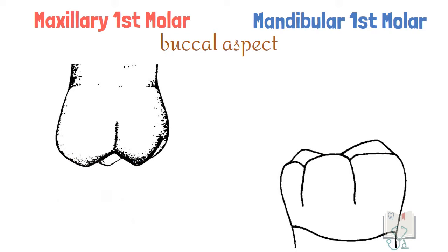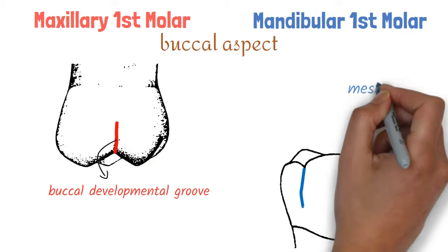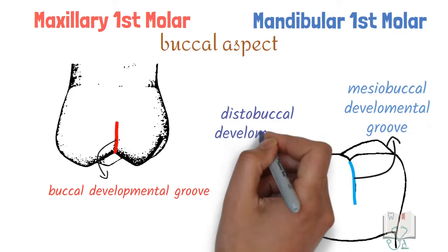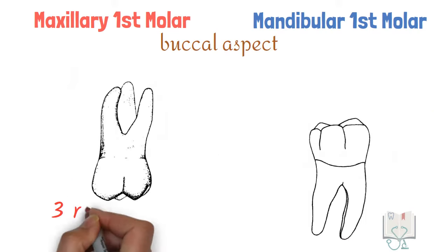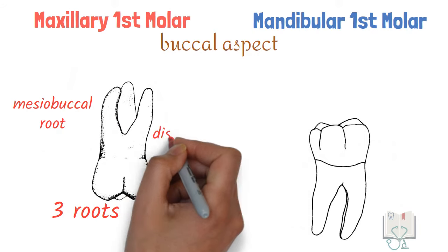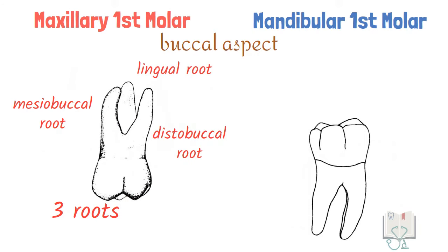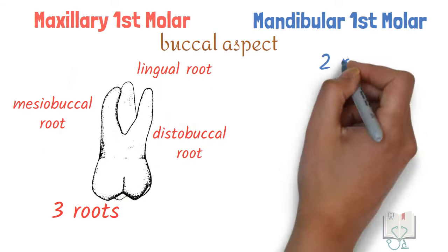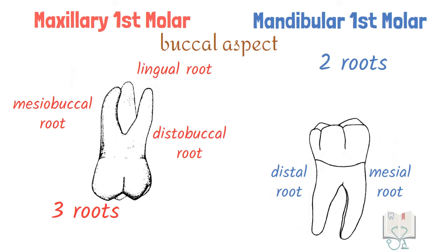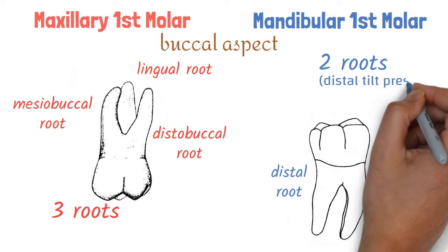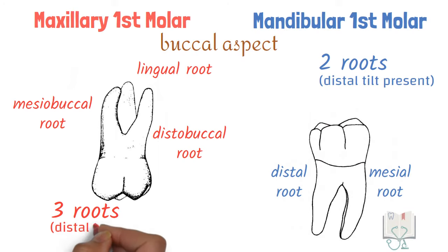Maxillary first molar has one buccal developmental groove, whereas in mandibular first molar there are two buccal grooves: mesiobuccal developmental groove and distobuccal developmental groove. In maxillary first molar, all three roots — mesiobuccal root, distobuccal root, and lingual root — are visible. In mandibular first molar, both mesial root and distal root are visible. Moreover, both mandibular roots have a distal tilt not present in maxillary roots.